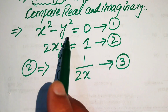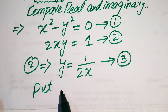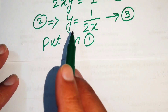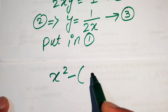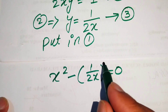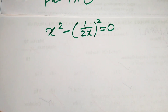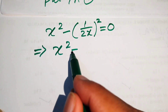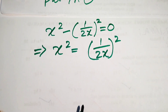We substitute the value of y from Equation 3 into Equation 1. Substituting, we get x squared minus 1 over 2x whole squared equals zero. Moving the second term to the right-hand side gives x squared equals 1 over 2x whole squared.